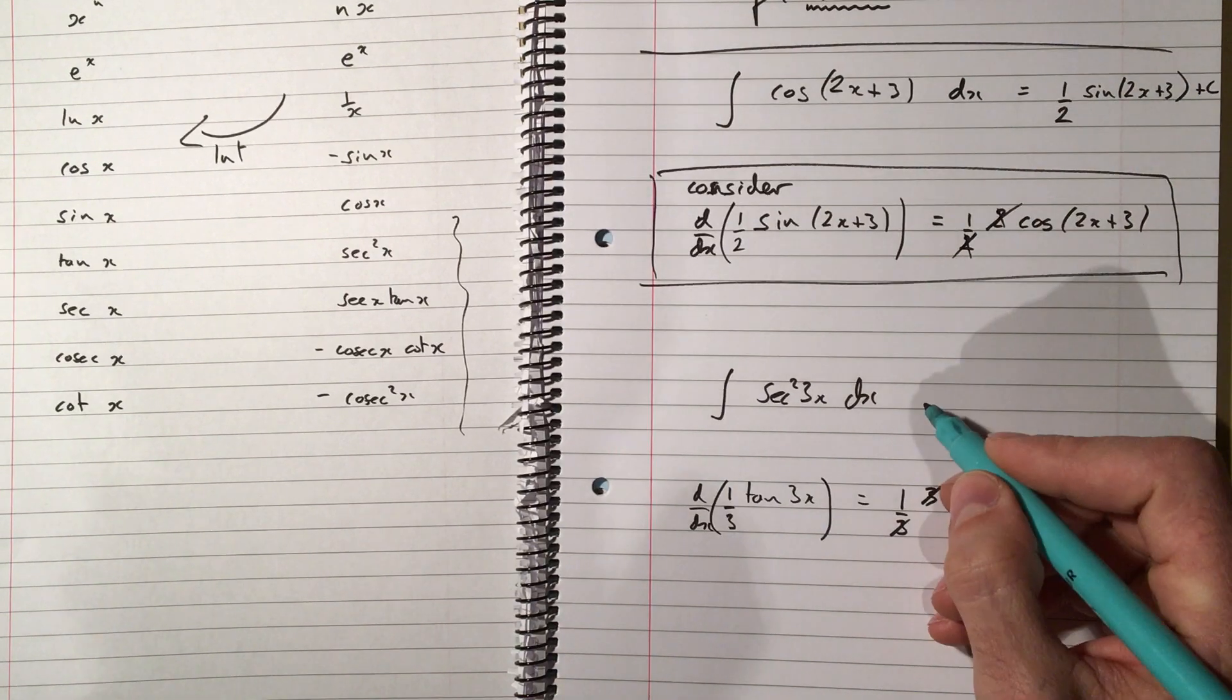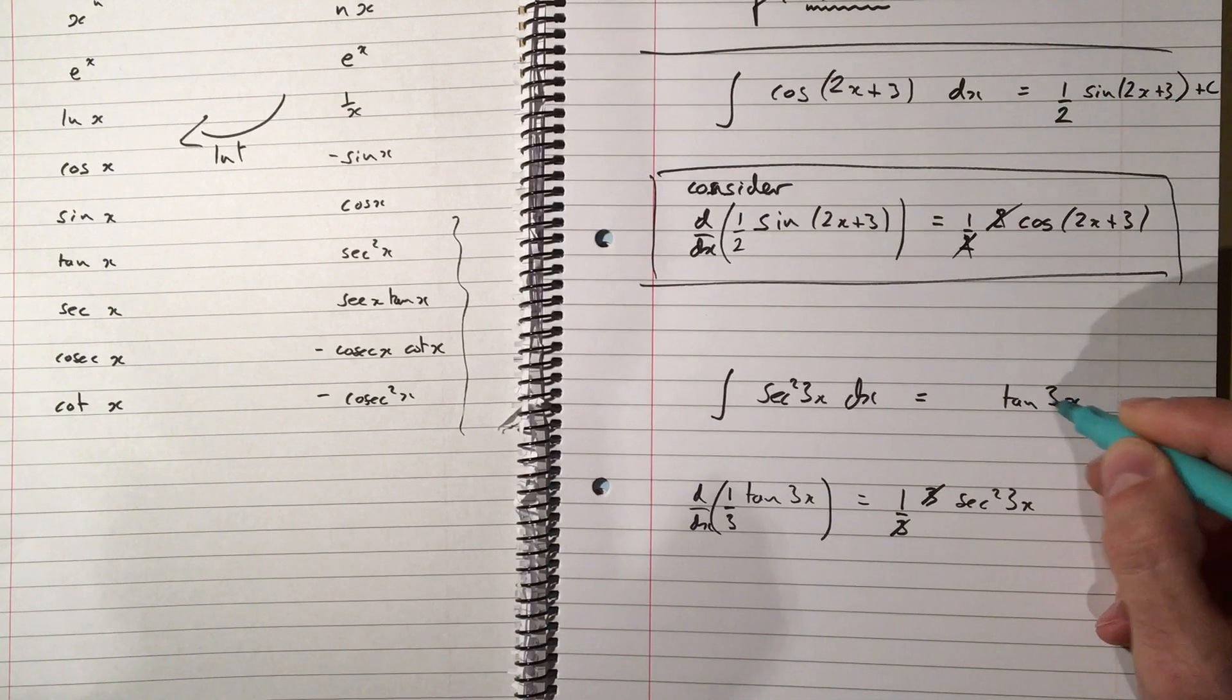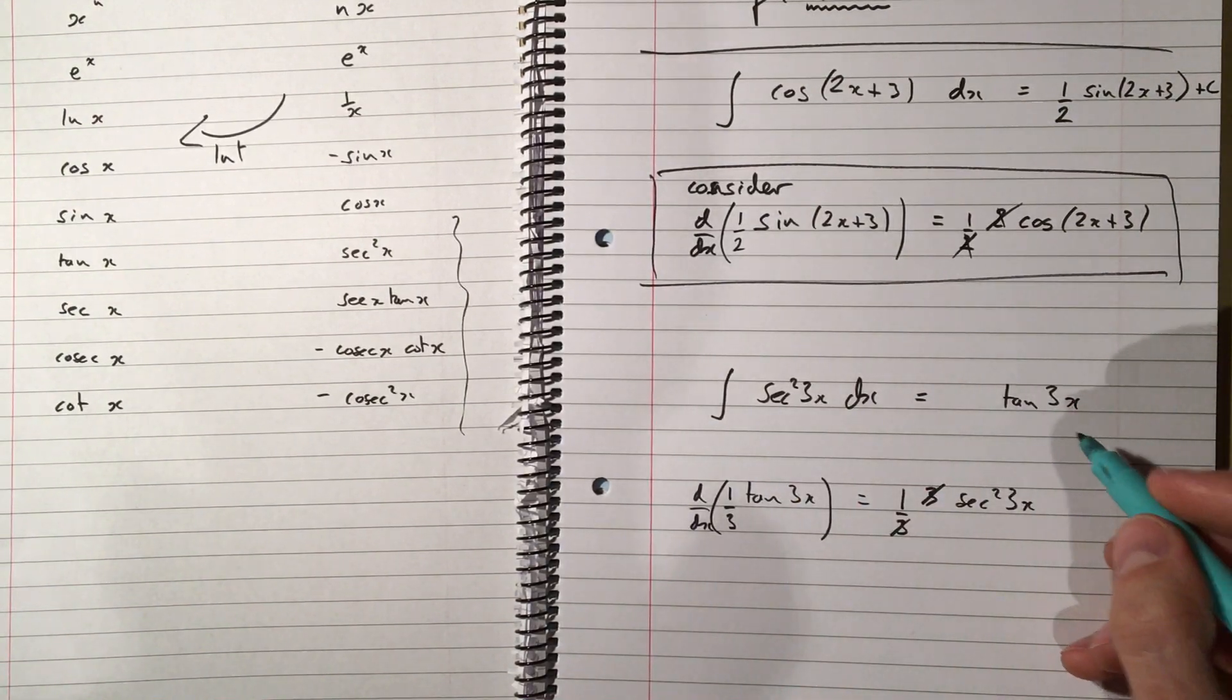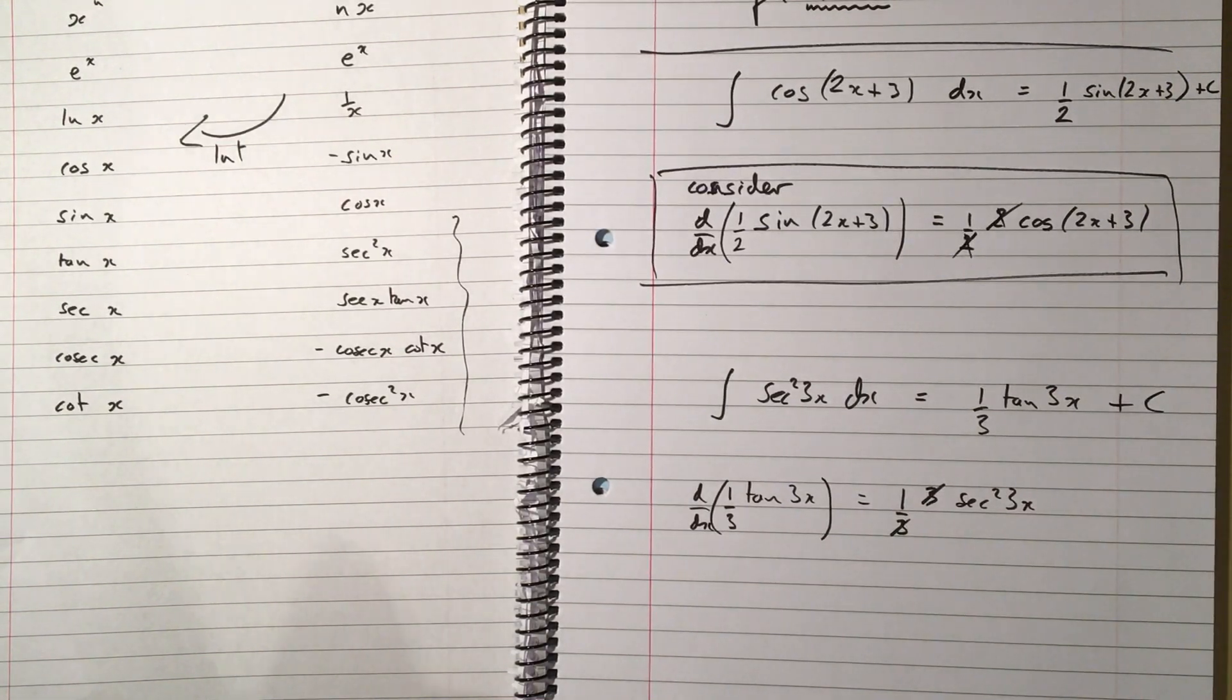So sec squared of 3x, well, sec integrates to tan. So instead of sec squared 3x, we get tan 3x, and then we divide by the coefficient of the x. Don't forget your constant of integration.